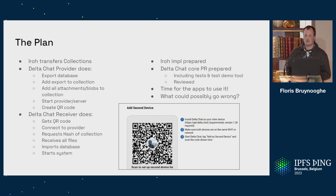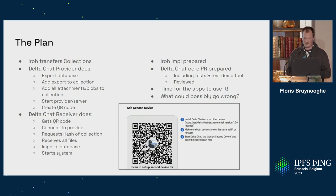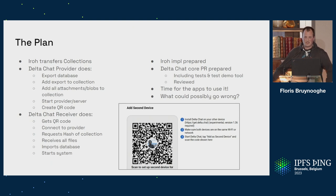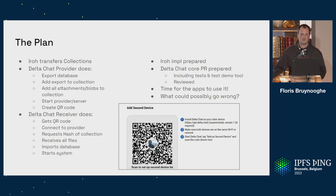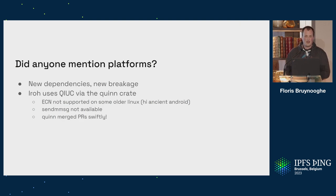We had the IRO implementation prepared, made a release, created the Delta Chat PR, which was fully reviewed and had tests. There was also a developer-oriented testing tool that a few people had used to try out transfers. Everything worked fine — transfers worked on real accounts. Time to ask the UI developers and app developers to start implementing on their side. This is roughly how the QR code looks, I think in the desktop version. Hopefully everything tested, everything works. Or not quite.